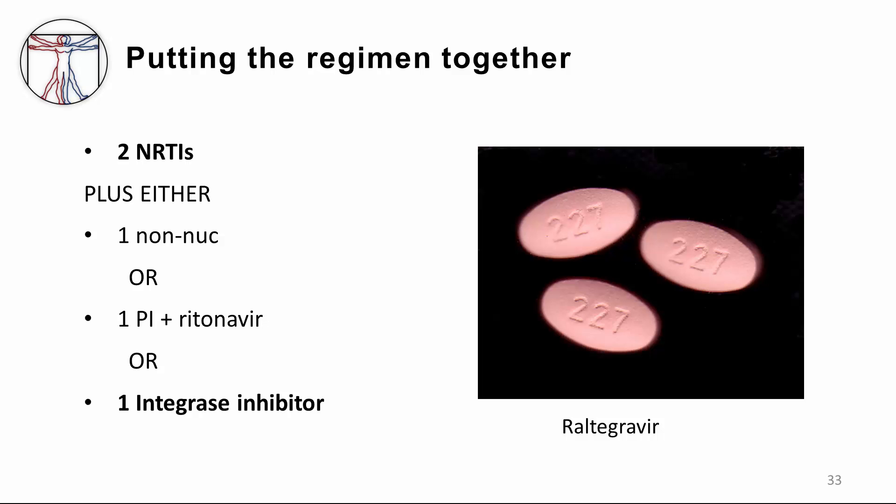How do you put the regimen together? Most practitioners refer to national and international guidelines published by bodies such as the International AIDS Society, the IAS, the DHHS, and internationally, the WHO. Rather than going into the specifics of each guideline, here are the main concepts. We generally use three drugs from at least two classes. A typical regimen would be two NRTIs such as tenofovir and emtricitabine, plus either one NNRTI such as efavirenz, or two NRTIs plus one PI — often boosted ritonavir — or two NRTIs plus one integrase inhibitor, which is seen very commonly these days because it's so well tolerated.